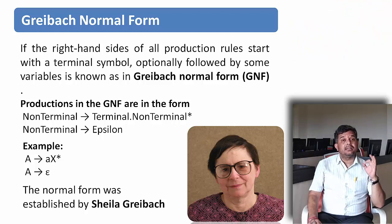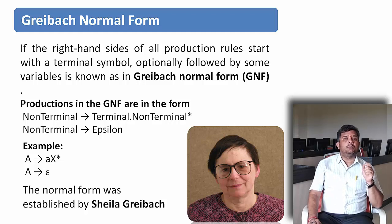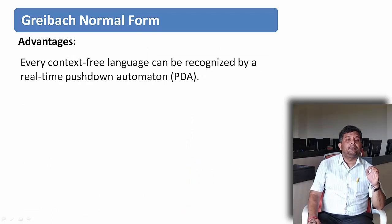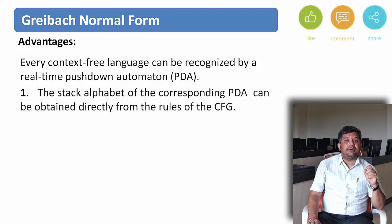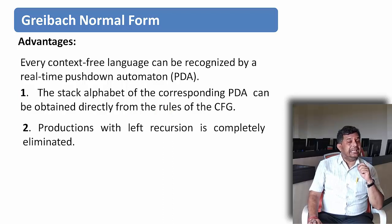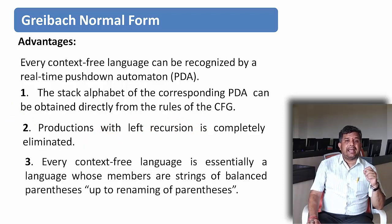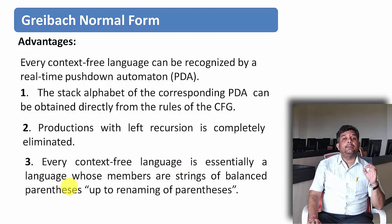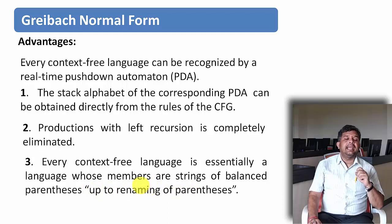We have already discussed Chomsky's Normal Form and now we are discussing Greibach Normal Form. What is the need for one more normal form? We know that every context-free grammar is recognized by a pushdown automaton. The first advantage is the stack alphabet of the corresponding PDA can be obtained directly from the rules of the grammar. The second advantage is that productions with left recursion are completely eliminated. The third advantage is that every context-free grammar essentially represents a language whose members are strings of balanced parentheses, up to renaming of parentheses.